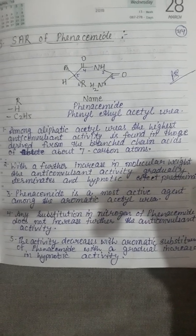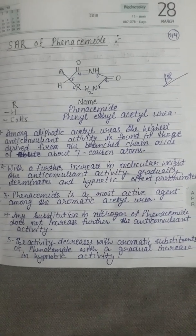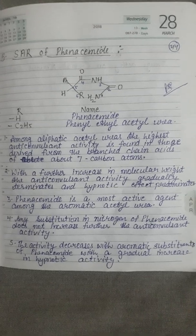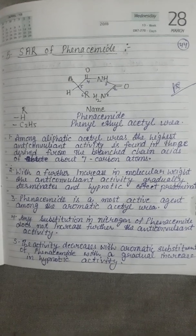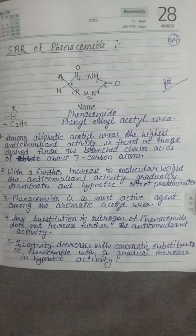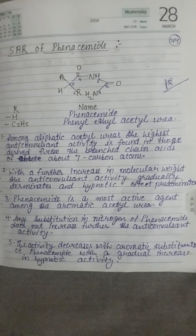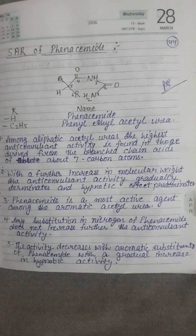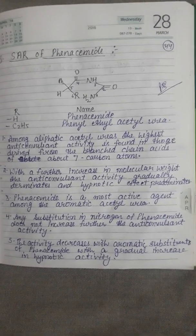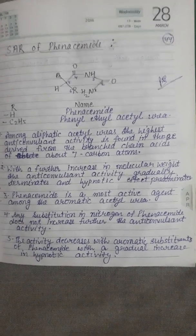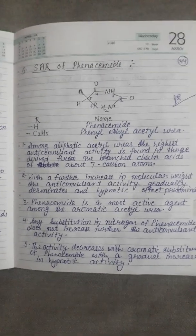With further increases in molecular weight, the anti-convulsant activity gradually diminishes and hypnotic effect predominates. Phenacemide is the most active agent among the aromatic acetylureas. Any substitution on nitrogen in phenacemide does not further increase anti-convulsant activity. Activity increases with aromatic substituents on phenacemide, with a gradual increase in hypnotic activity.